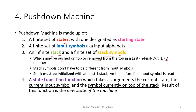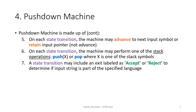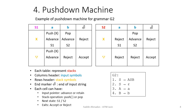We can also have a state transition function. This function tells us what is the new state of the machine based on the current state of the stack. State transition can also include operations such as advancing to the next input or retaining, meaning we stay at the current input pointer. The machine can also have stack operations such as push or pop. After all input strings have been read, exit labels such as accept or reject will let us know if the string is part of the language or not. This is an example of a pushdown machine that is able to accept any strings generated by grammar 2.